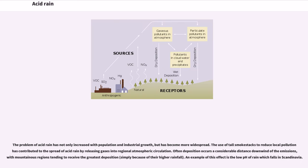The problem of acid rain has not only increased with population and industrial growth, but has become more widespread. The use of tall smokestacks to reduce local pollution has contributed to the spread of acid rain by releasing gases into regional atmospheric circulation. Often deposition occurs a considerable distance downwind of the emissions, with mountainous regions tending to receive the greatest deposition, simply because of their higher rainfall. An example of this effect is the low pH of rain which falls in Scandinavia.